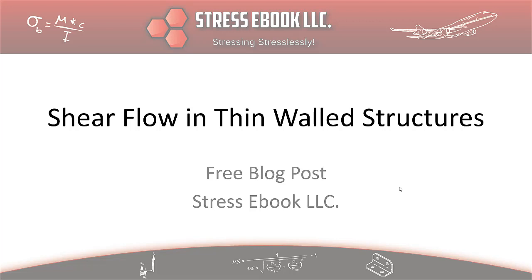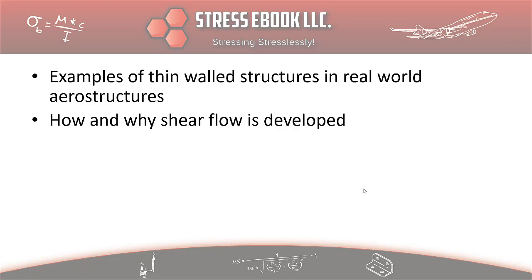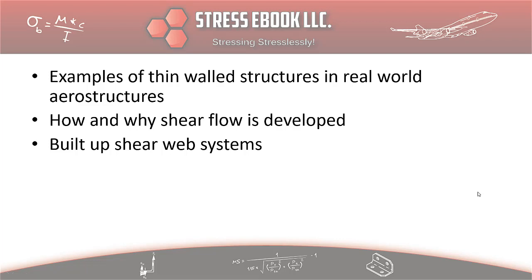At the top level, this blog post will go into some examples of what real-world thin-walled structures are in aerospace. It will list some of those for you. Then after that, we will discuss how and why shear flow is developed in these particular thin-walled structural systems. Following that, we will discuss some components of what a built-up shear web system is — things like different caps, webs, upper and lower caps that make up a built-up shear web system.